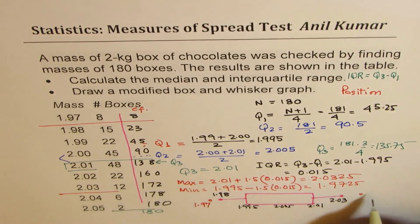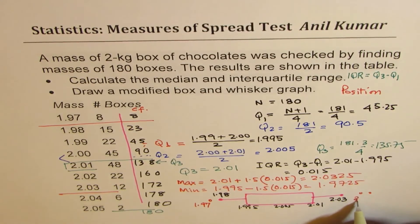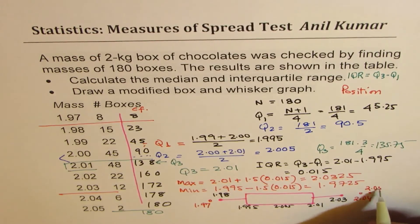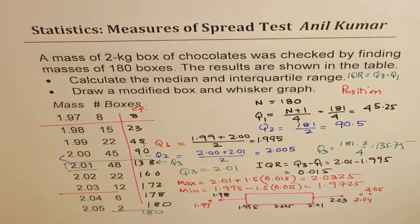So we have 1.97, and on this side we have 6 and 2 of 2.04 and 2.05. You get an idea. So those are the outliers for us.